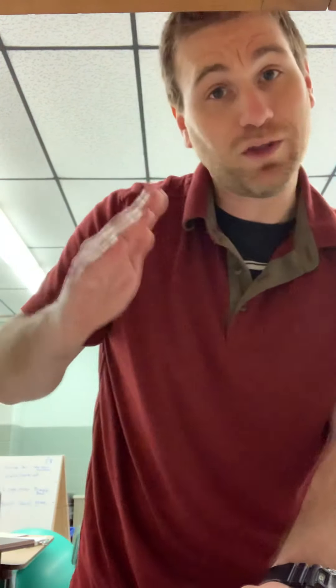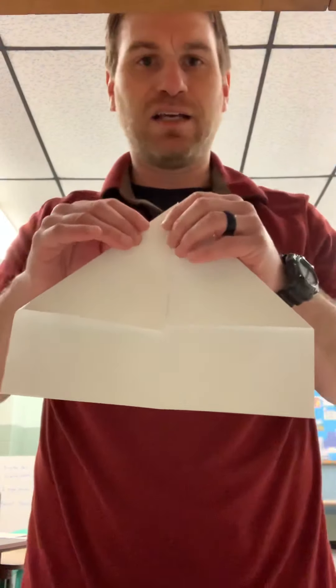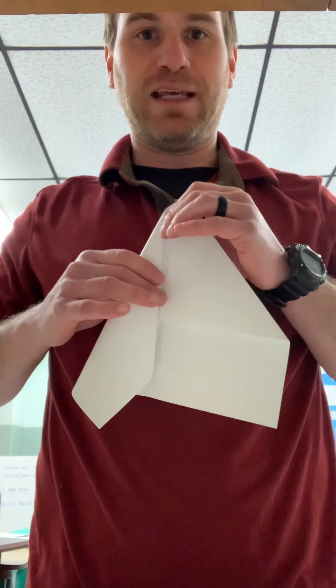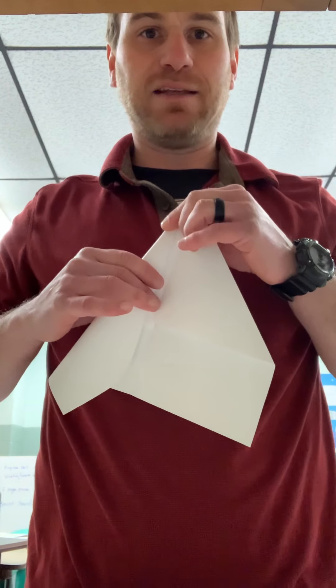All right, this part next is, I think, the trickiest part about making the paper airplane. You've got to fold it over again once more. Okay, so I'll kind of show you up here what I'm doing. I'm going to fold it in again to make a point. Okay, so did you see that?